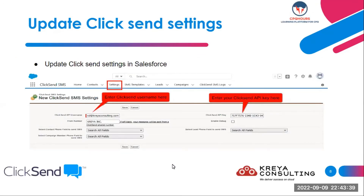Update the API connection setting in Salesforce to establish the connection between ClickSend and Salesforce. As I have shown you in the previous slide, how do you get the API key from the ClickSend API settings — what you need to do is shown on this slide.